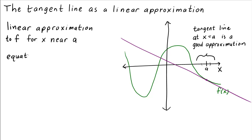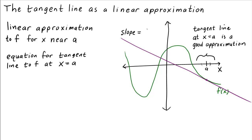So let's calculate the equation for the tangent line at x equals a. What's the slope of the tangent line? The slope is the derivative evaluated at x equals a. So we need to find the equation for a line with slope f prime of a that goes through the point drawn here. The x coordinate of the point is a, and the y coordinate is the value of f at a — it's just f of a.